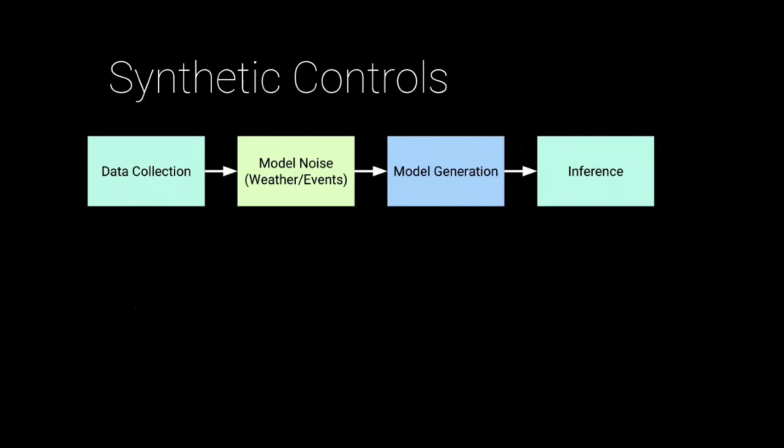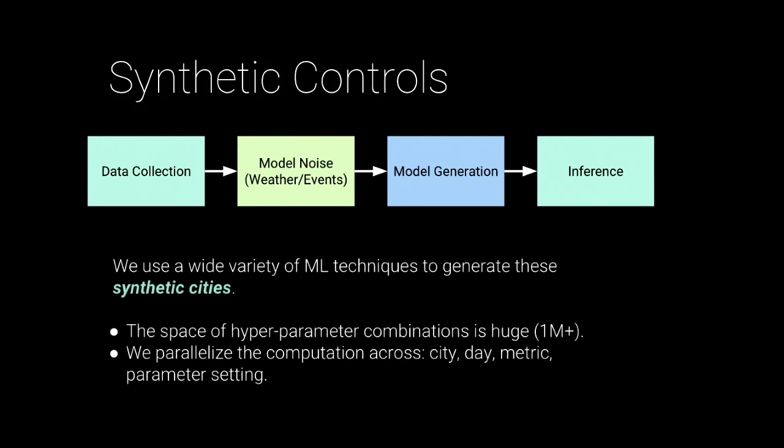How do we do this? We collect a lot of data, model noise similarly to what forecasting systems do, generate a model for each city and each metric, and perform our inference. We use a wide variety of machine learning techniques to generate these synthetic cities. There's a massive hyperparameter space with millions of potential parameters that we tune using Bayesian optimization. We can parallelize these over cities, days, metrics, and more.